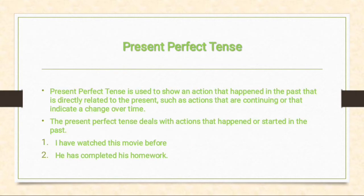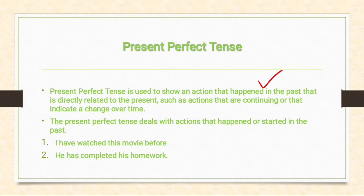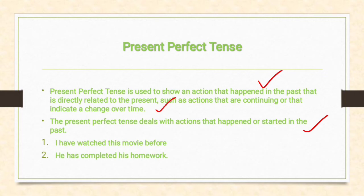Present perfect tense definition: we use present perfect tense to show an action that happened in the past but is directly related to the present. It is used when actions have been performed in the past but are directly related to the present — such as actions that are continuing or that indicate a change over time. The present perfect tense deals with actions that happened or started in the past.